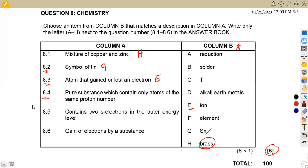Then 8.4, the pure substance, which contains only atoms of the same proton number. So that's an element in this case. So an element, which is F.